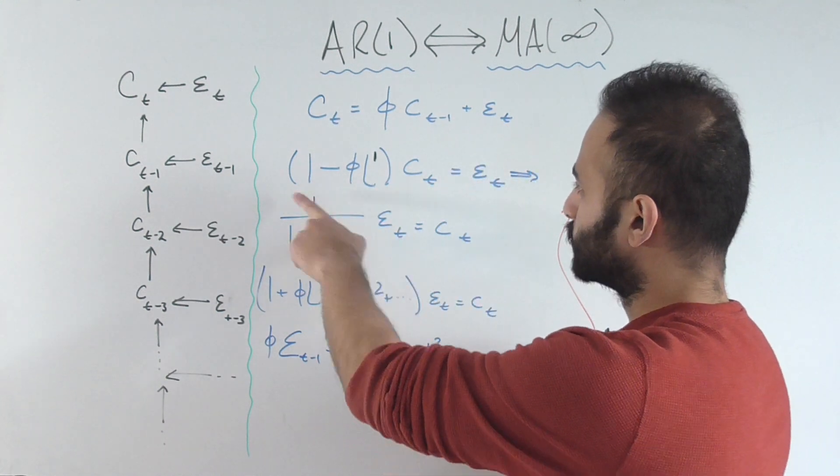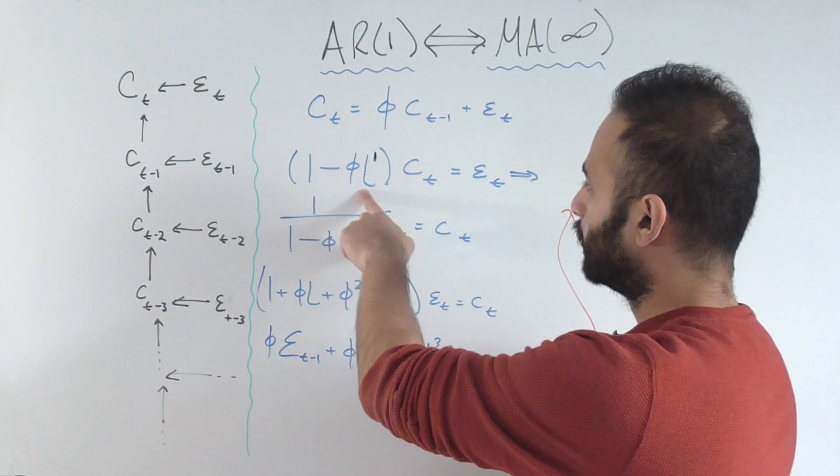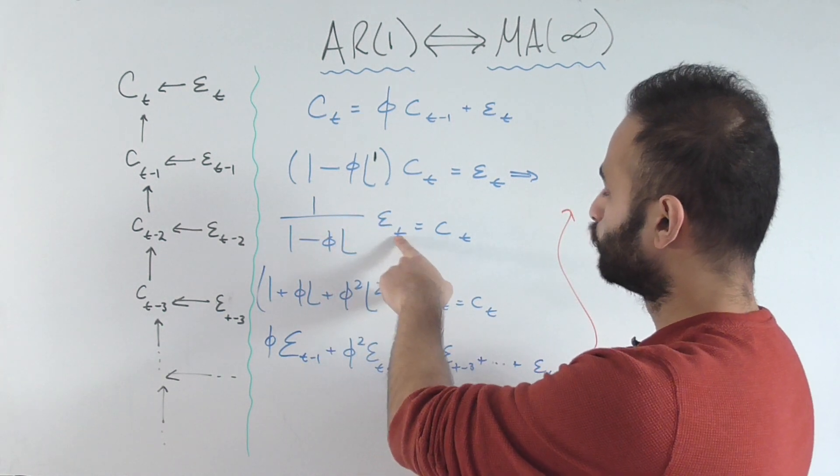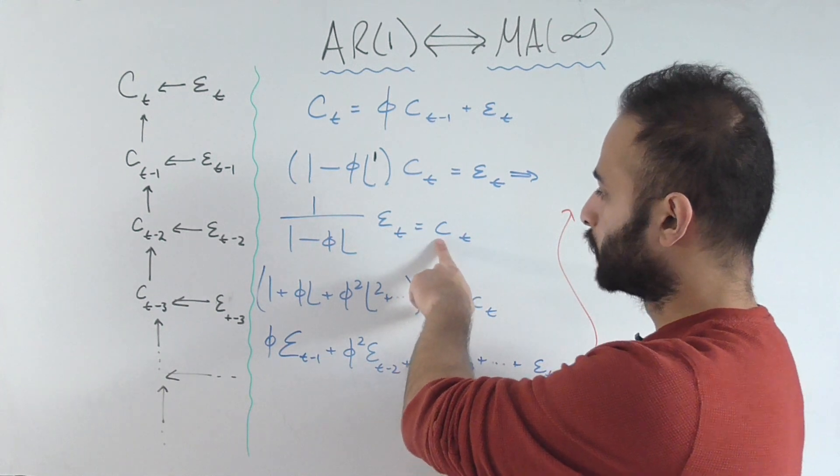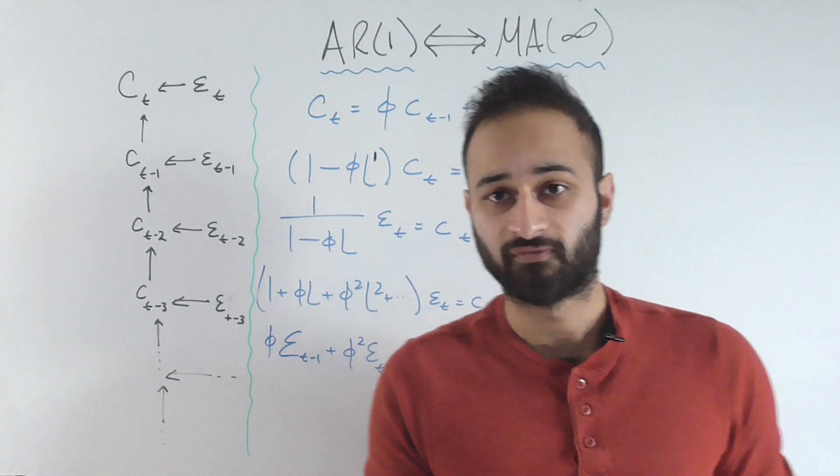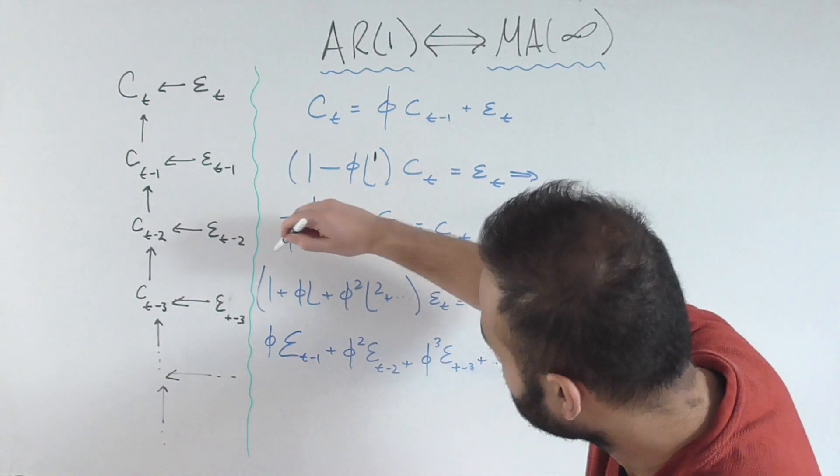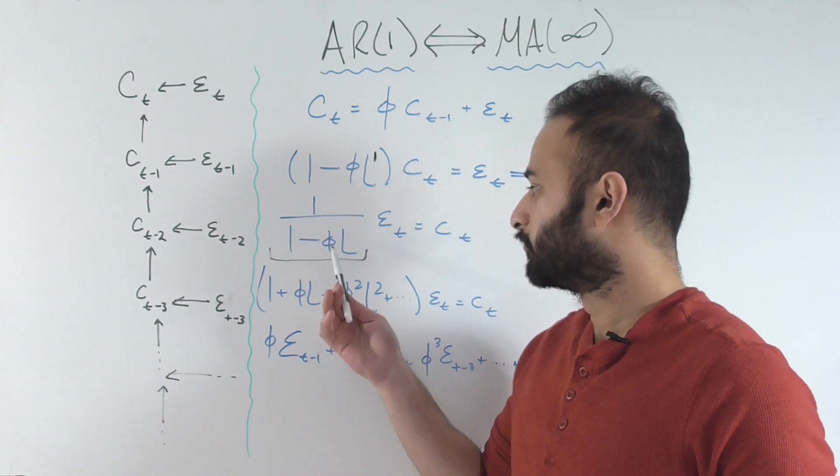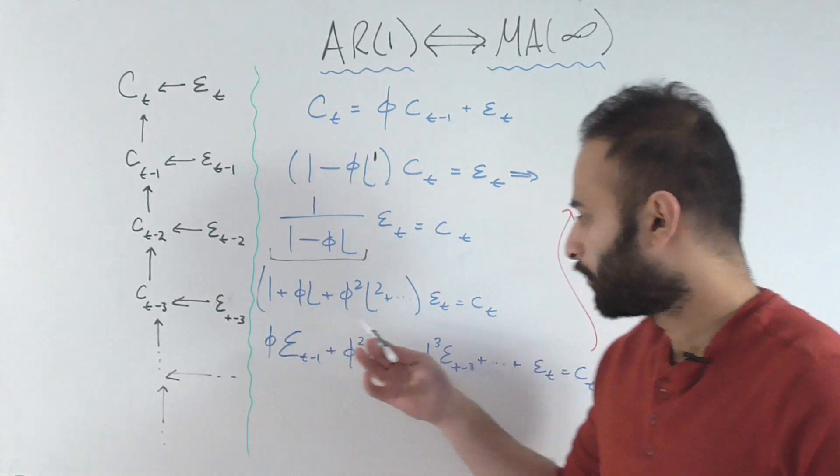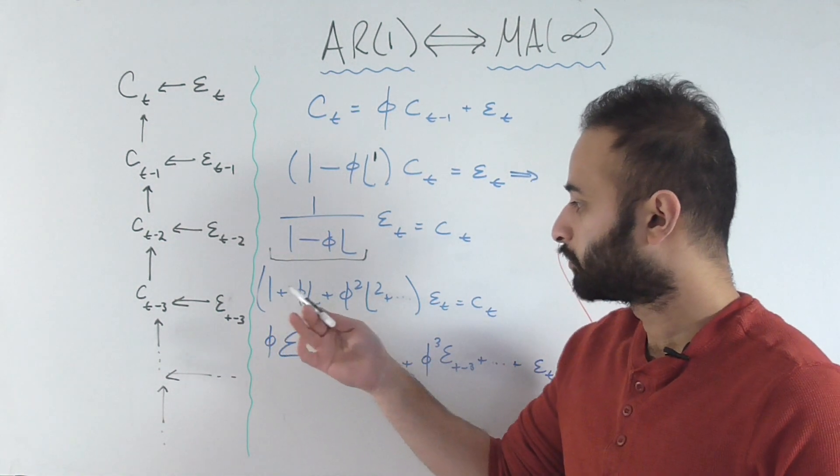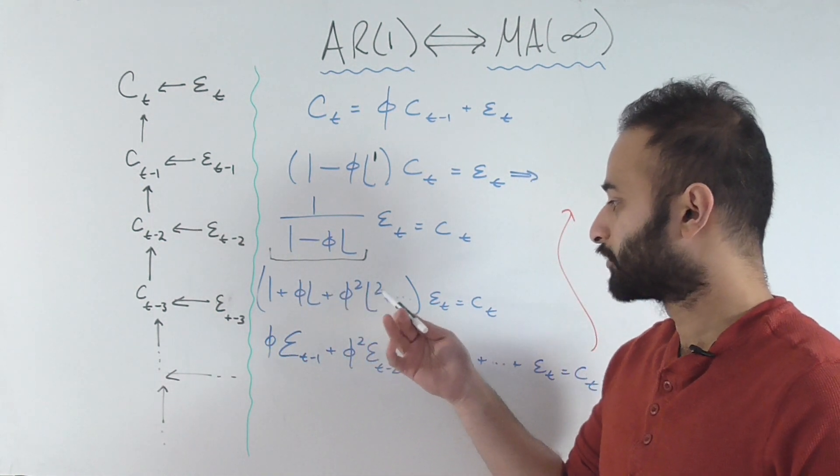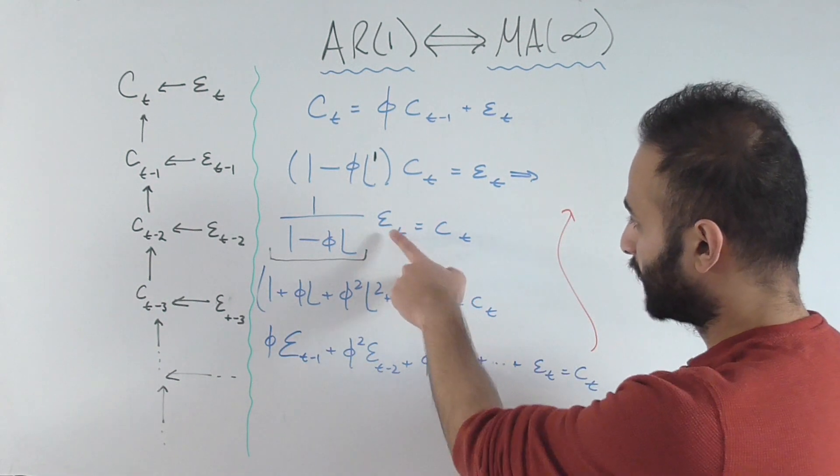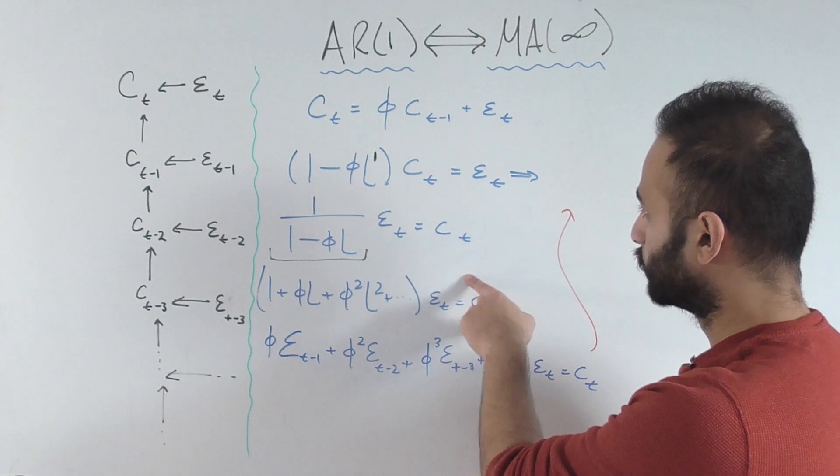If I divide both sides by (1 - φL), I get 1/(1 - φL)ε_t equals c_t. Just like we did in the previous video, we can expand this as an infinite geometric series with common ratio φL and write that out in its complete form, which is 1 + φL + φ²L² + ... to infinity, multiplied by ε_t, and still equals c_t.